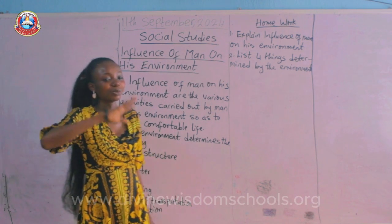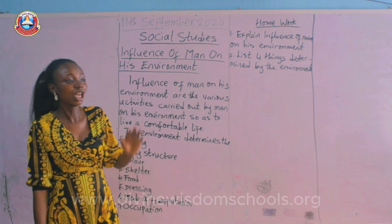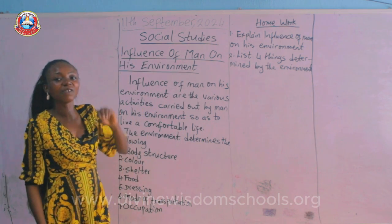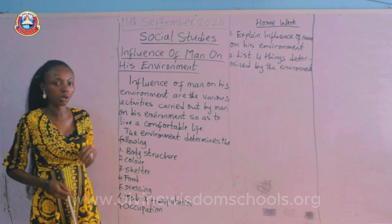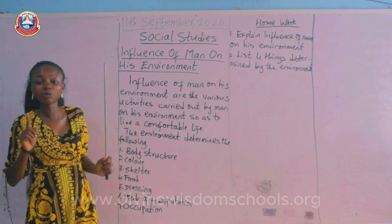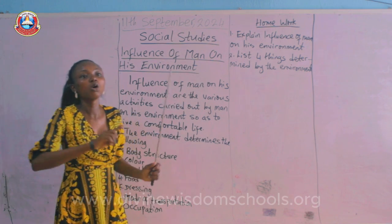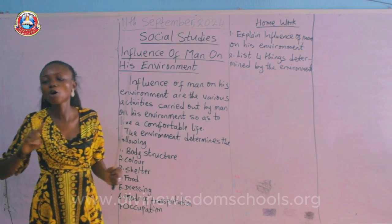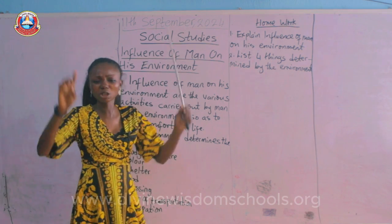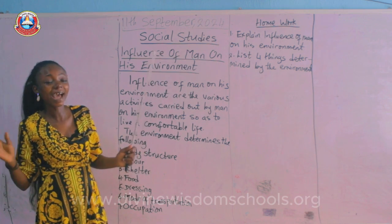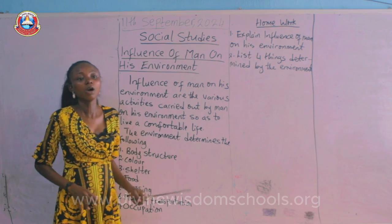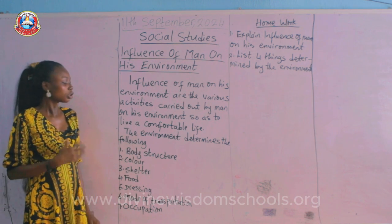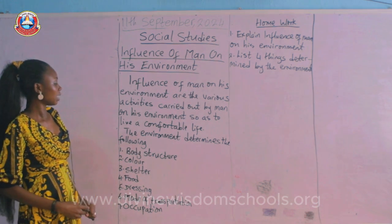None of us has a choice in choosing the environment we are born into, but we all have a choice to influence our environment to our benefit. You don't choose to be born in a riverine area or an area with low or high rainfall — you just find yourself there. But we do have the choice to influence it to our liking.